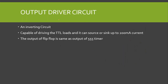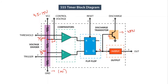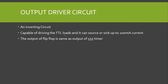Next is the output driver circuit, which is basically an inverting circuit. Since the output is taken from Q-bar, an inverting stage is used so that the output of the 555 timer matches the Q output of the flip-flop. This output circuit is capable of driving TTL loads and can source or sink up to 200 milliamperes of current.